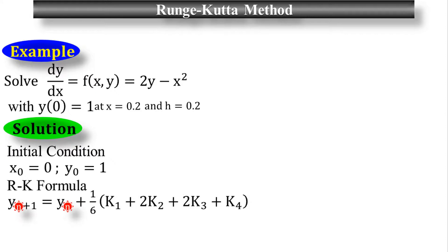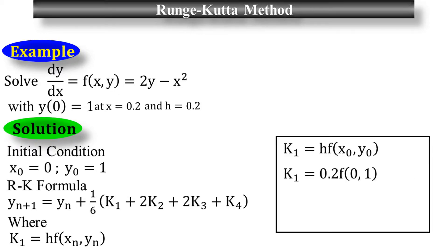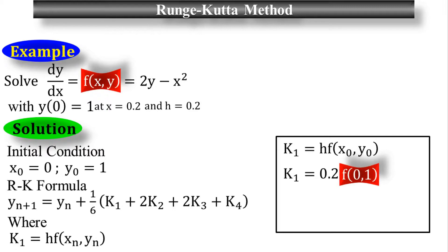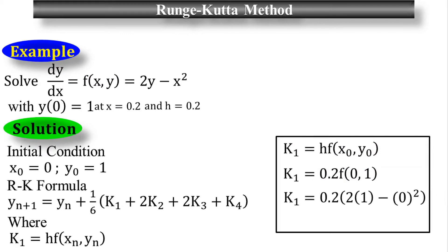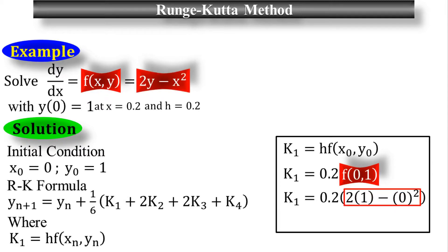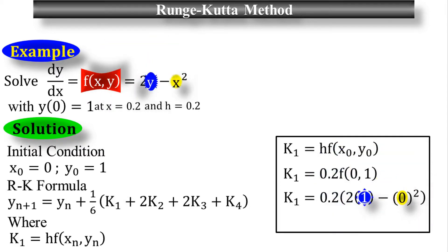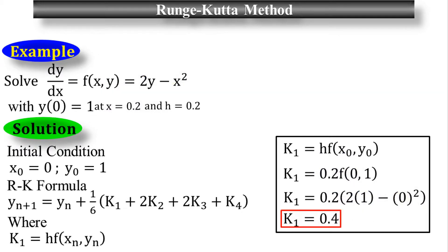The formula of k₁ is h times f(x_n, y_n). Substituting the values where h is 0.2, x_n is 0, and y_n is 1: k₁ equals 0.2 times f(0, 1) equals 0.2 times (2 times 1 minus 0 squared), since f(x, y) equals 2y minus x squared. The final value for k₁ is 0.4.